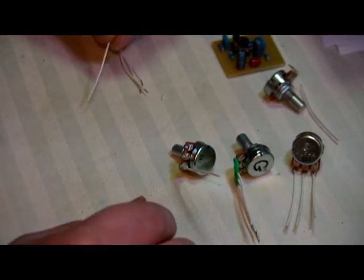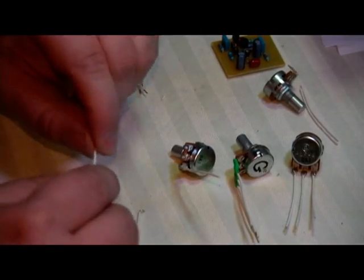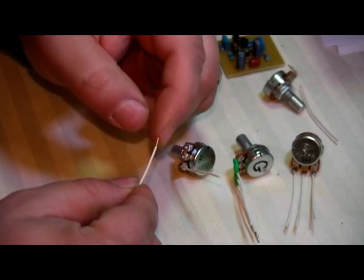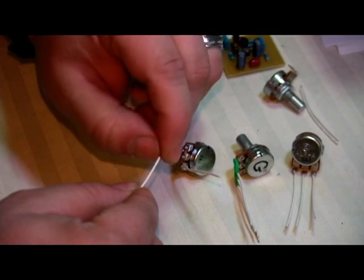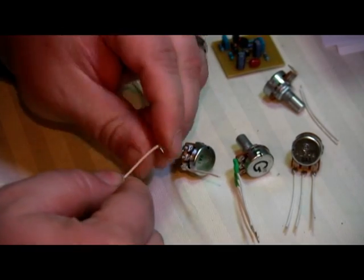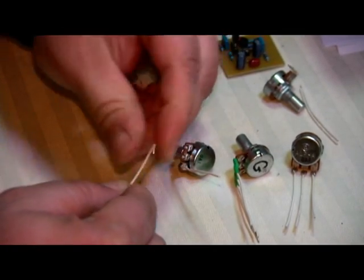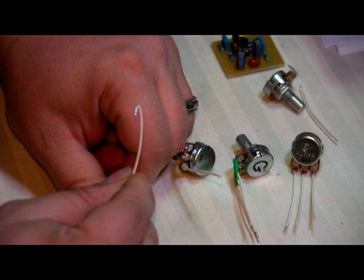Once I do that, and I have enough to cover all the pots that I'm going to need, I take this bit and I bend it back, like so.